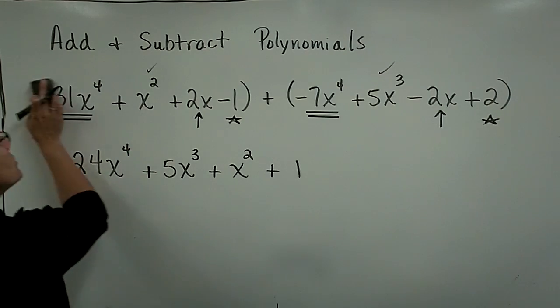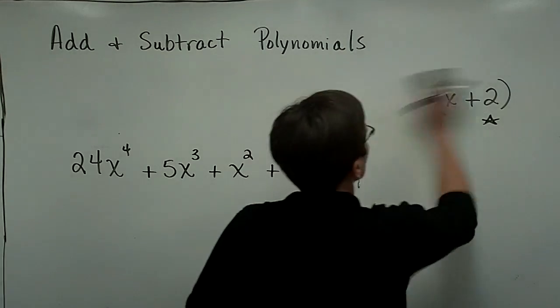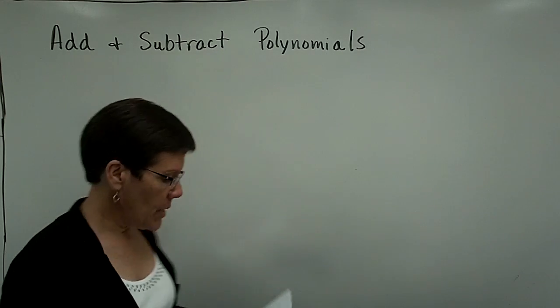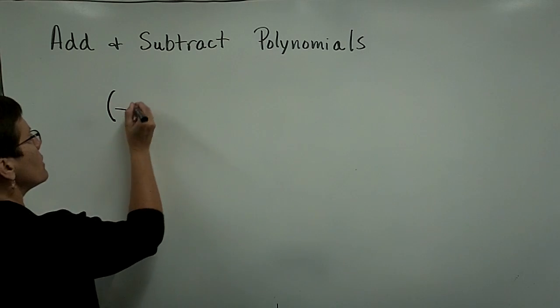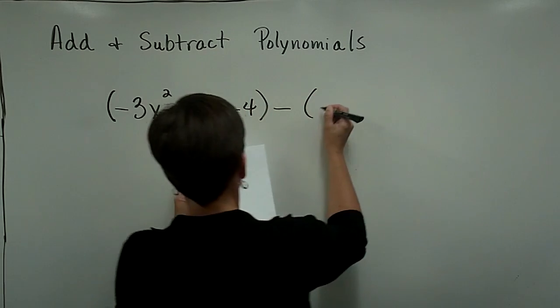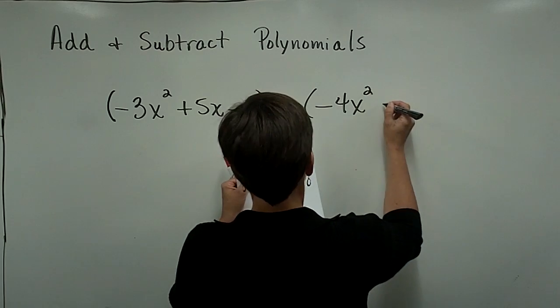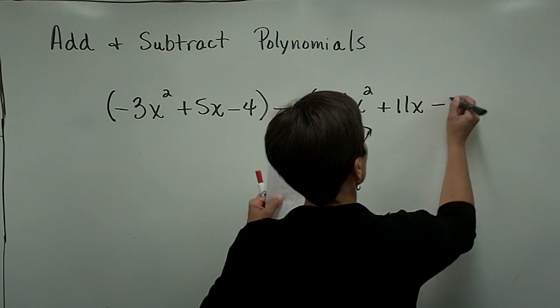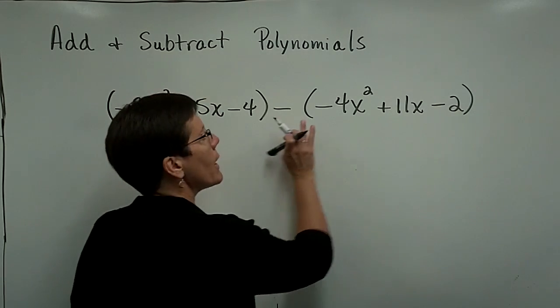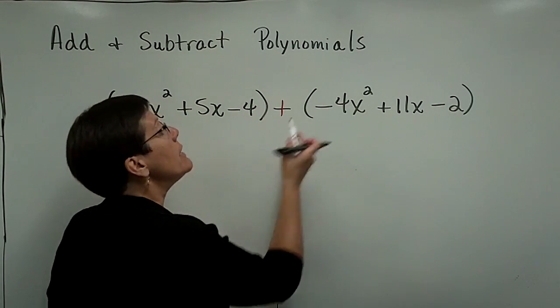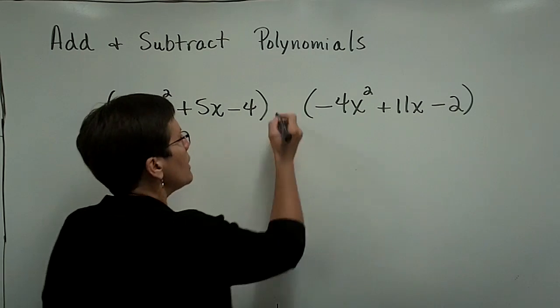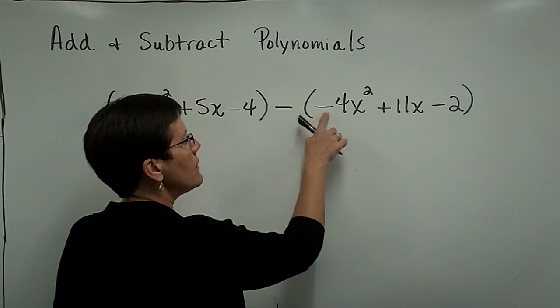Let's go ahead now and subtract two polynomials. The only difference is when I subtract, I add the opposite. Here's the problem that I'd like to do. I'd like to take this polynomial, a negative 3x squared plus 5x minus 4, and subtract a negative 4x squared plus 11x minus 2. Essentially, all I need you to recognize is when you want to subtract that polynomial, you have to add the opposite of all of those. It is a subtraction problem, so I have to add the opposite of this.